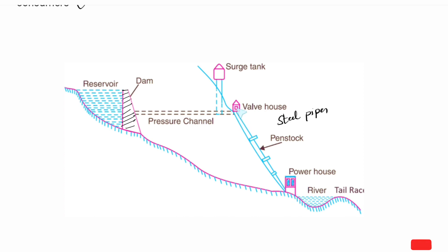You can see the water flow goes through the valve house, which controls the water. If there is a problem in the powerhouse, the valve house controls the water flow. The water force drives the turbine. After passing through the turbine, water is discharged through the tail race back to the river.